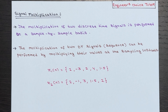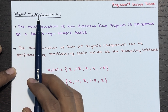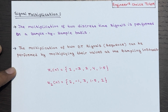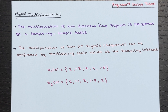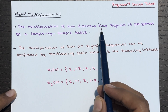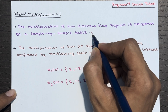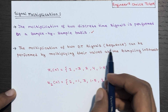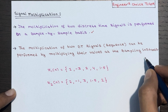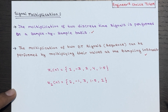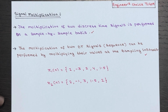Welcome to this lecture on the multiplication of discrete time signals. When we talk about multiplying two discrete time signals, we do it sample by sample — taking each sample from one signal and multiplying it with the corresponding sample from the other signal. The multiplication of two discrete time signals is performed on a sample-by-sample basis, multiplying their values at the same sampling instance.